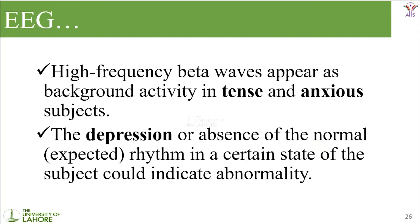High-frequency beta waves appear as background activity in intense and anxious subjects. If a person is tense or anxious, during EEG the beta waveforms will appear in the background — it is not like beta waveforms are upfront; alpha waveform is upfront but beta may appear at some points. If a person is in depression or shows an absence of the normally expected rhythm in a certain state, it could indicate abnormality — such as abruptly switching from alpha to beta or from beta to theta waveforms.